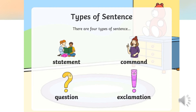So as we said, we have four types of sentences: statements, commands, questions, and exclamations. Statements and commands both end with a period — a full stop. Questions end with a question mark. Exclamations end with an exclamation mark. So this is simply our grammar lesson. I hope you enjoyed it. Bye!